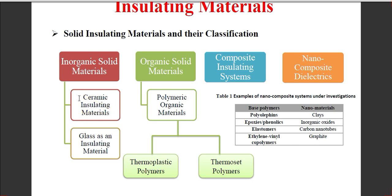Ceramic insulating material is the most commonly used, compared to glass insulating material. Ceramic insulators are more effective and are cheap materials, which is why they are used mostly. One consideration is that ceramic materials have more weight compared to other options. However, they are available economically for use in transmission and distribution systems.